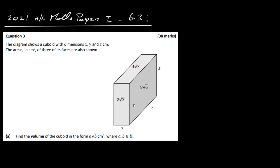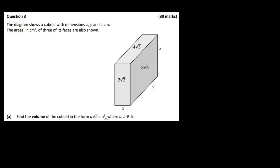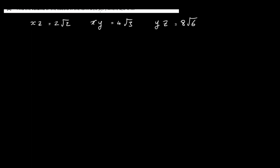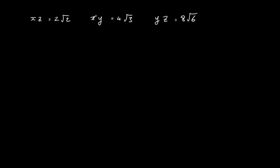We have to find the volume of the cuboid in the form a√b cubic centimeters, where a and b are natural numbers. I'm going to write down the three equations for the area of each face: x times z = 2√2, x times y = 4√3, and y times z = 8√6. I'm going to use simultaneous equations by substitution to find x, y and z, and then find the volume.